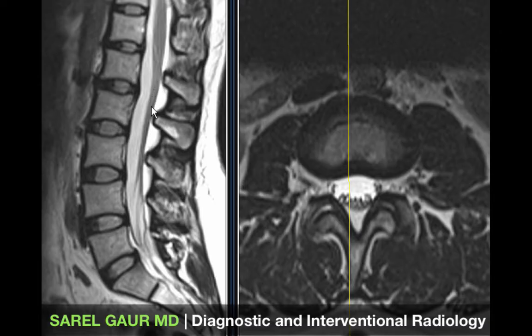Inferior to this level is the cauda equina, which is just the individual nerve roots running through the CSF. I can see the CSF surrounding these structures, and this is all enclosed in a dural sac.